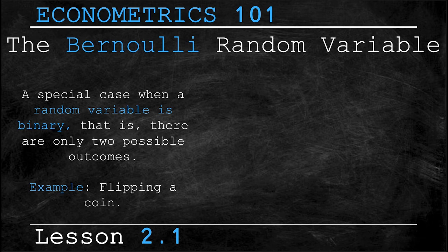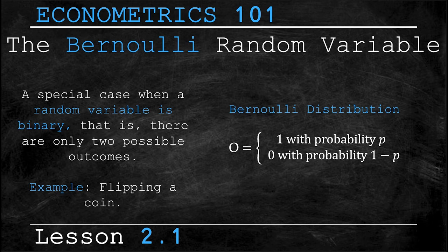So the Bernoulli distribution is written like this. The outcome is one with probability p or zero with probability one minus p. Remember that the probabilities from all outcomes must sum to one and in this case they still do. p plus one minus p is one.